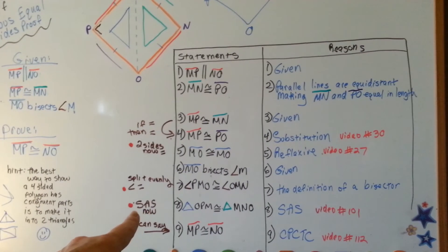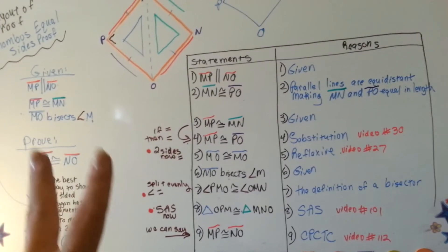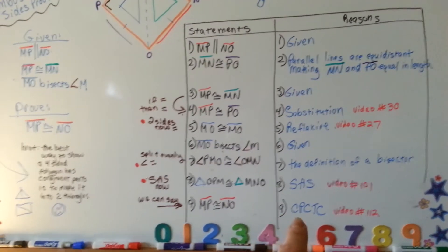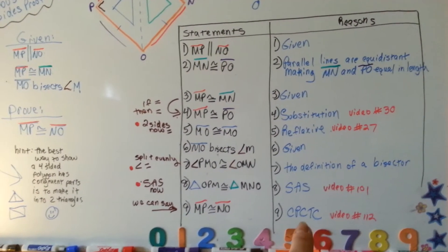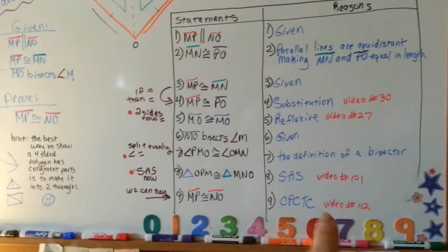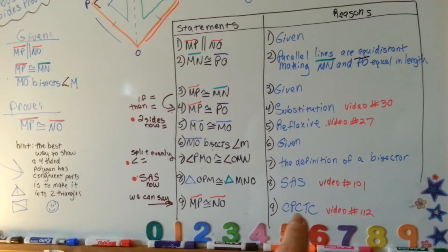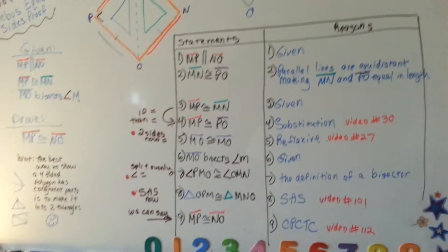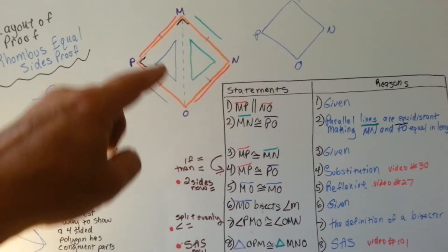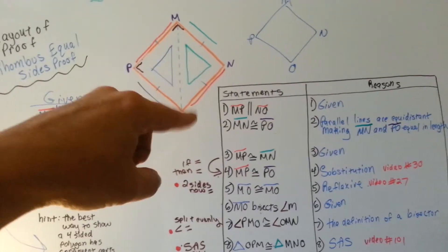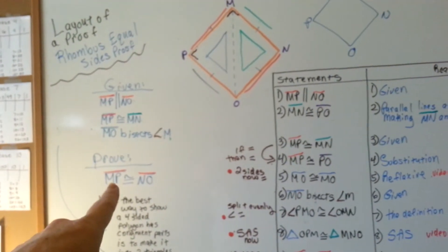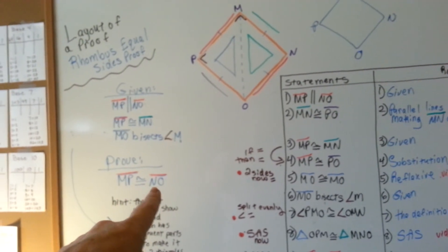So now we can say we've got side, angle, side now. Once you have two congruent triangles, you can use CPCTC. If you don't know what that is, that's in video 112. It's corresponding parts of congruent triangles are congruent. So we're saying if this triangle is congruent with this triangle, then MP has to be congruent to NO.